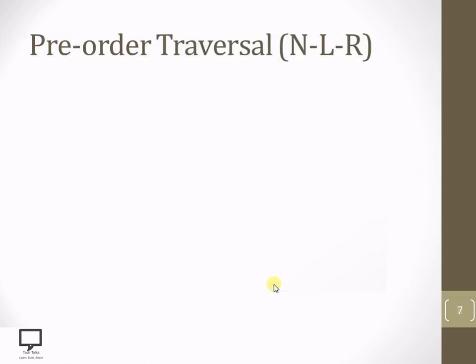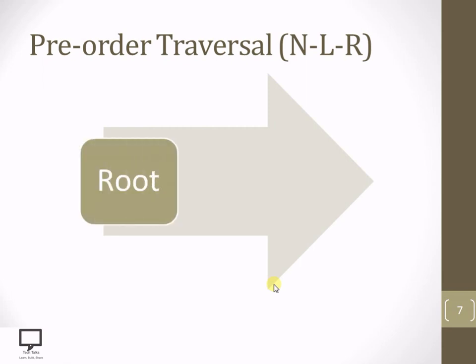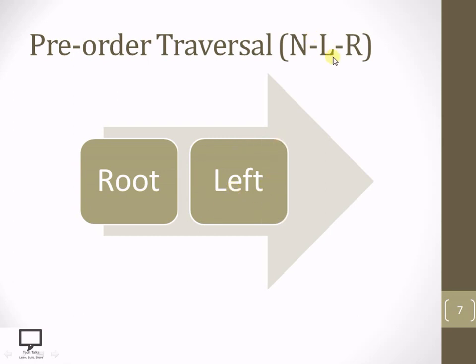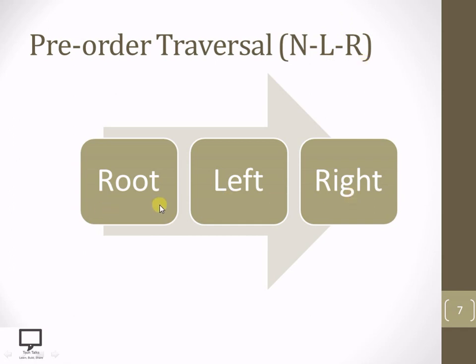Pre-order traversal follows the sequence: N (root node), L (left subtree), then R (right subtree). So we first process the root node, then go forward to the left subtree, and after completing the left subtree, we go forward to the right subtree.